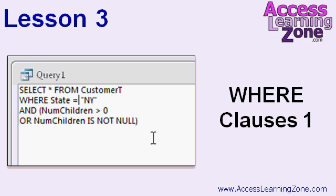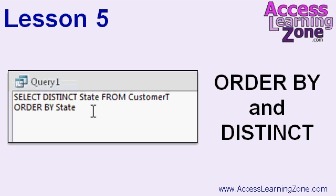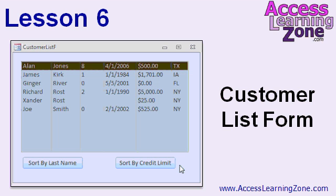In Lesson 3, we're going to begin looking at more complicated WHERE clauses. In Lesson 4, we're continuing on with WHERE clauses — we'll learn about parameter queries, the LIKE keyword, wildcard characters, the IN clause, and ranges of characters. In Lesson 5, we'll take a look at the ORDER BY and DISTINCT clauses. In Lesson 6, we'll tie everything together: we'll make a customer list form with a list box, two buttons to change the sorting by last name or credit limit, and use dynamic SQL with a little VBA code.